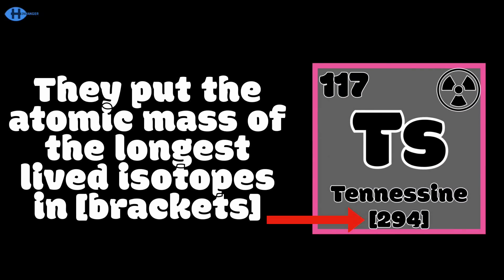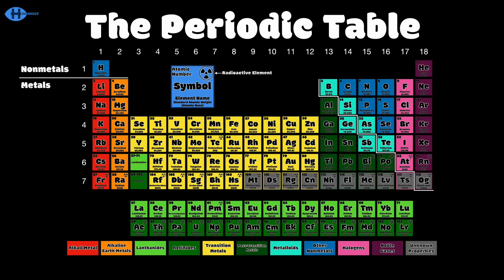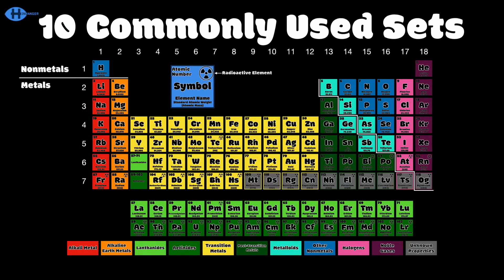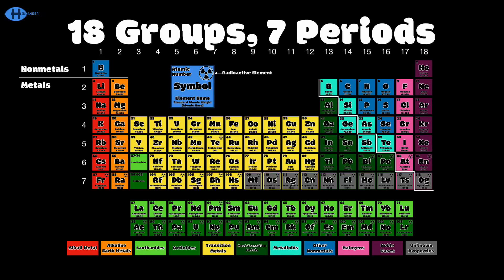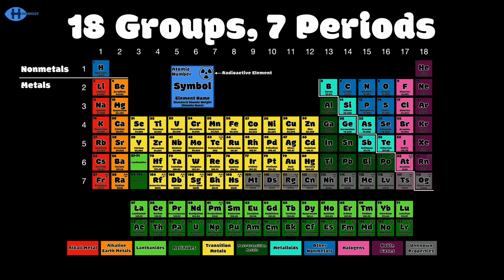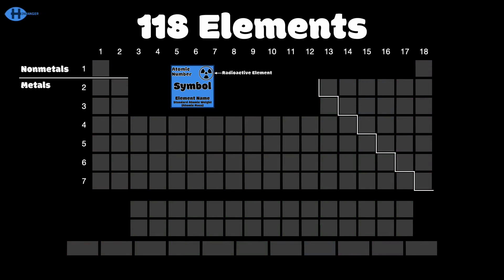If an element has no stable isotopes and no consistent natural isotope composition, its atomic mass is given in brackets — usually the mass of the longest-lived isotope. The periodic table has 118 elements with 18 groups and 7 periods. Now let's go through all the elements in order from 1 to 118.